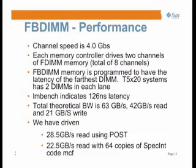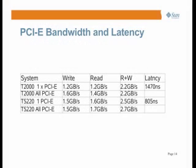We integrated PCI Express directly onto the die. Using a PCI Express exercise card called Bobo, we achieve about 1.5 gigabytes per second write, 1.6 read, and about 2.5 gigabytes per second combined read and write. Latency on Niagara 2 is about 805 nanoseconds — which is somewhat long due to two layers of PLX switches between the chip and the card. When we go to Victoria Falls, we have two by eight PCI Express and get nearly five gigabytes of raw bandwidth.